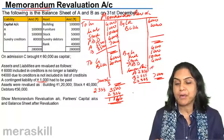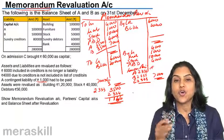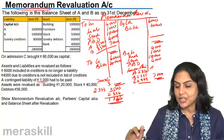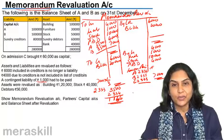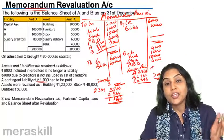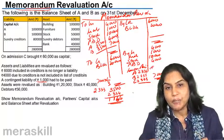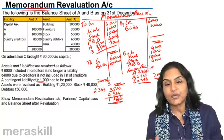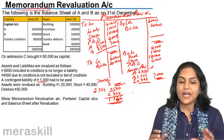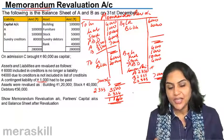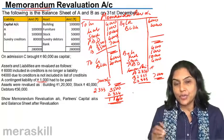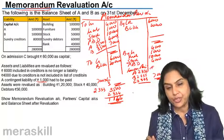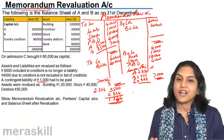In the second half of the memorandum revaluation account, we reverse all the entries done before. In this case we got a profit of 7,000 in the first half, and therefore a loss of the same 7,000 in the second half. This loss is given to all partners in the new profit-sharing ratio. The net effect is that assets and liabilities continue to be valued at their old values, but capital accounts get adjusted — exactly equal to the new partner C's share in the revaluation profit being debited to C's account, with credit given to A and B in their sacrificing ratio.